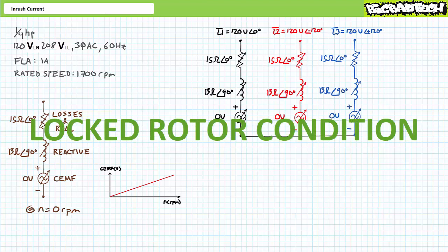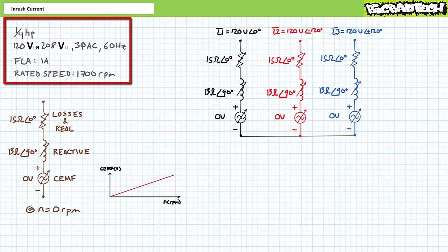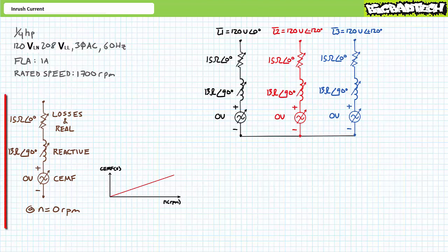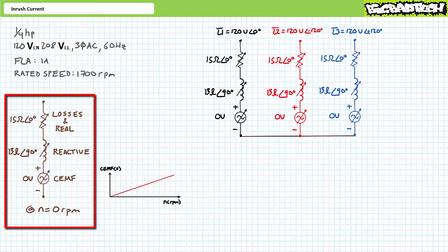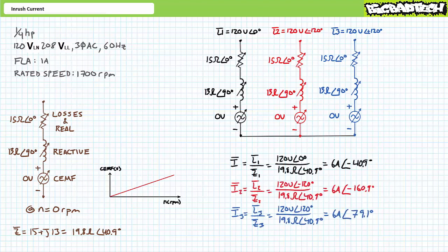Let's examine how rotational speed and the resultant CEMF influence inrush current. Consider a quarter-horsepower motor designed to operate using 208-volt line-to-line, 120-volt line-to-neutral, 60 Hz three-phase AC in a Y configuration. At rest, the winding can be modeled as a variable resistance of 15 ohms, a reactive component of 13 ohms, and zero counter-electromotive force. The total impedance is roughly 19.8 ohms at an angle of 40.9 degrees. Upon closure of a full-voltage starter, each winding experiences full voltage, and application of Ohm's law demonstrates each winding draws roughly 6 amps, lagging each phase by a relative 40.9 degrees. This is the inrush phenomenon.